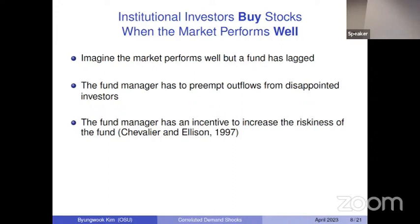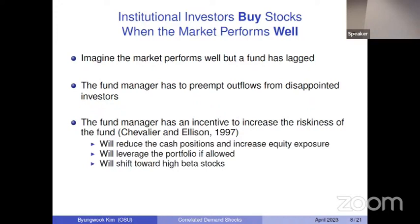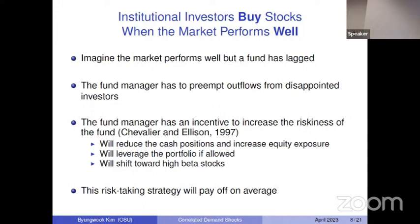This situation creates a strategic incentive for me as a fund manager to increase the riskiness of my fund, because by increasing riskiness I might have a chance to catch up. I typically hold some cash for liquidity management, but now I'll decrease my cash holdings to buy more stocks so my portfolio has a higher market exposure. If I don't have a leverage constraint, I may even lever up; if I do have a leverage constraint, I'll tilt toward riskier stocks such as high-beta stocks.